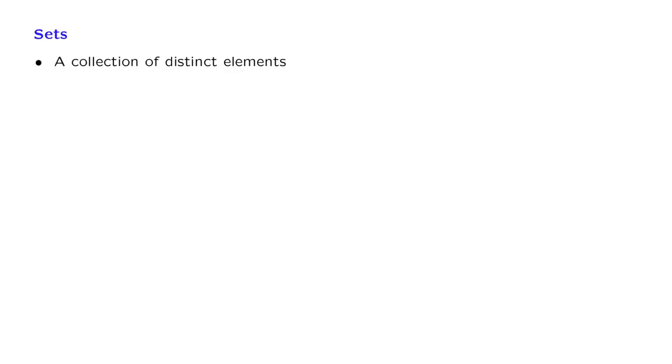So what is a set? A set is just a collection of distinct elements. So we have some elements, and we put them together, and this collection we call the set S.